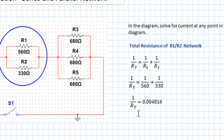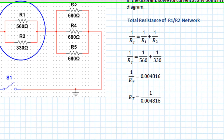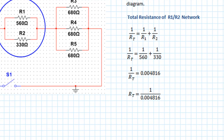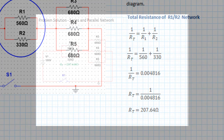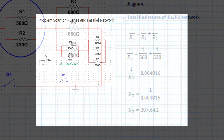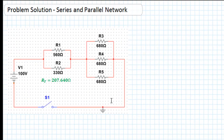Now remember what we've actually got here is 1/RT — we haven't got RT. So to get RT we invert the value: RT = 1/0.004816, and if you put that in your calculator the value you get is RT = 207.64 ohms.